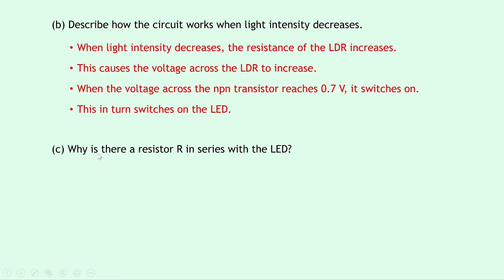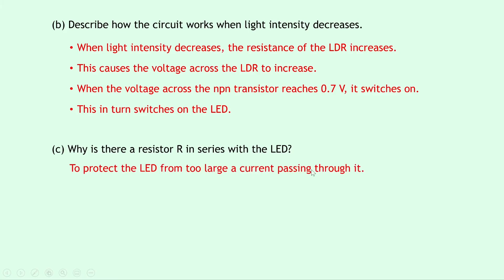Part C says why is there a resistor R in series with the LED? It's there to protect the LED from too large a current passing through it.